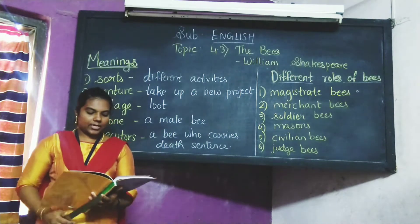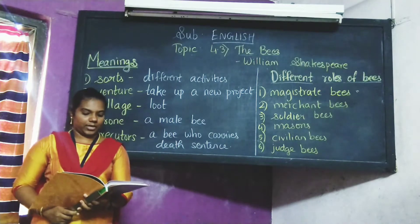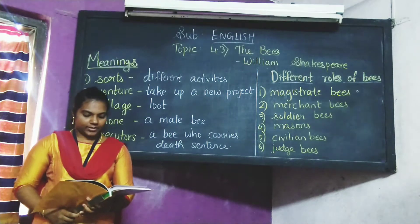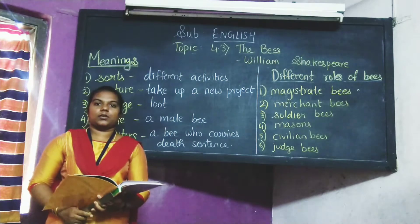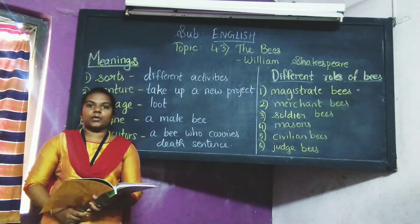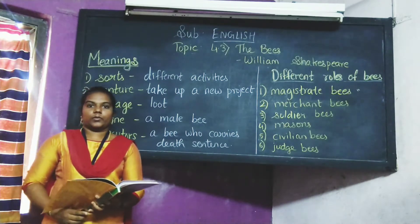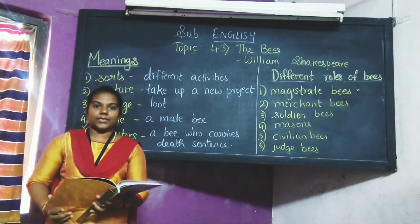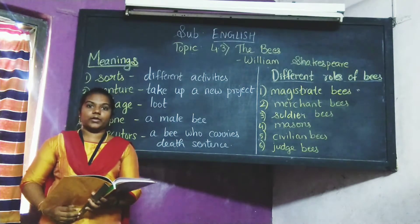Next, what is the work of the masons? The masons build the roofs of gold — that is, they build the honeycomb or the beehive. Just as in human life masons build houses and buildings for us, likewise for the beehive there are mason bees who build their honeycomb.